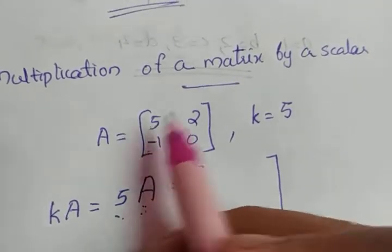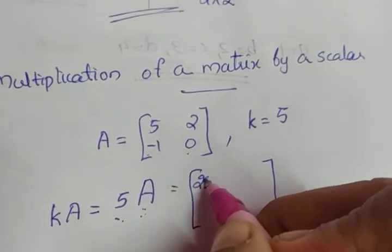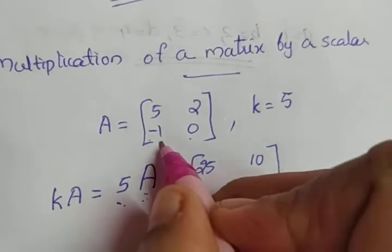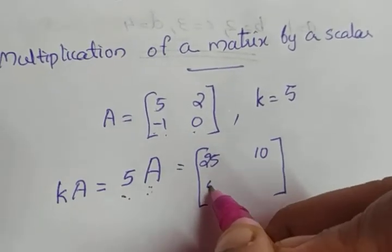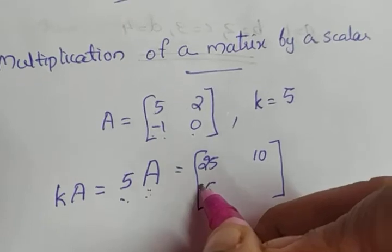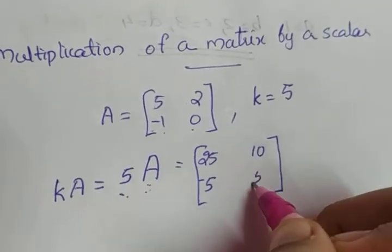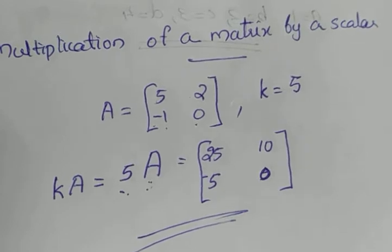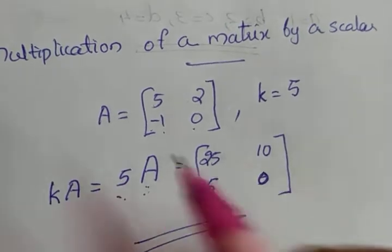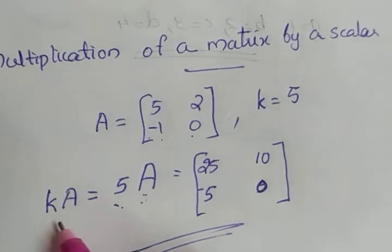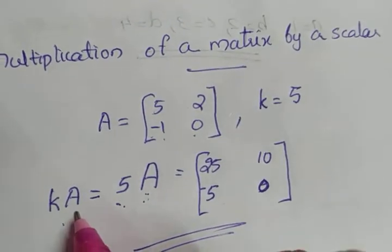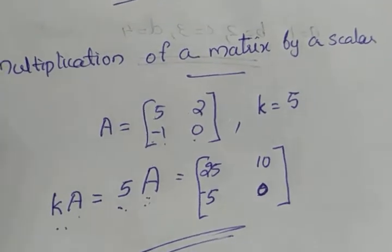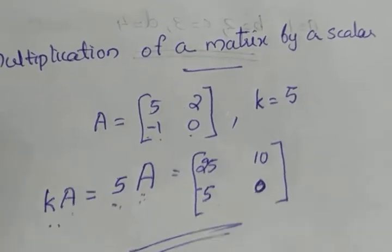So: 5 times 5 is 25, 5 times 2 is 10, −1 times 5 is −5, and 0 times 5 is 0. That is 5A equals [25, 10; −5, 0]. To multiply a matrix by a scalar, we multiply each and every element of the matrix by that scalar.